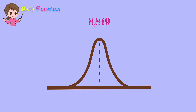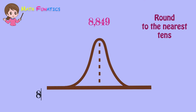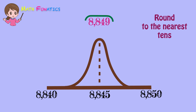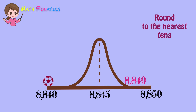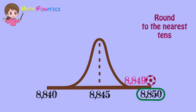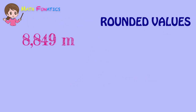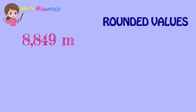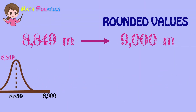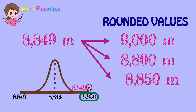Finally, let us round the same number to the nearest tens. 8,840 and 8,850 are the numbers placed on the two ends of the hill, and 8,845 is the one in the middle. Our number to be rounded is found right before 8,850. It will definitely end at 8,850, because 8,849 is closer to 8,850. To sum it up, the rounded values of 8,849 meters are 9,000 meters, 8,800 meters, and 8,850 meters.